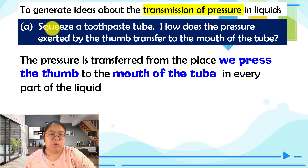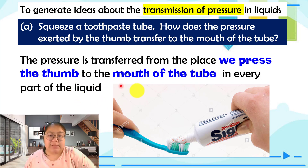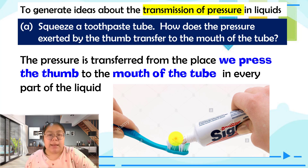First, we're going to look at squeezing a toothpaste tube. How does the pressure exerted by the thumb transfer to the mouth of the tube? From the diagram, the finger is pressed at the middle of the toothpaste tube, and the toothpaste comes out from the mouth of the tube. This means the pressure transfers from the center to the mouth of the tube, so the liquid or gas comes out. This is one idea about the transmission of pressure.